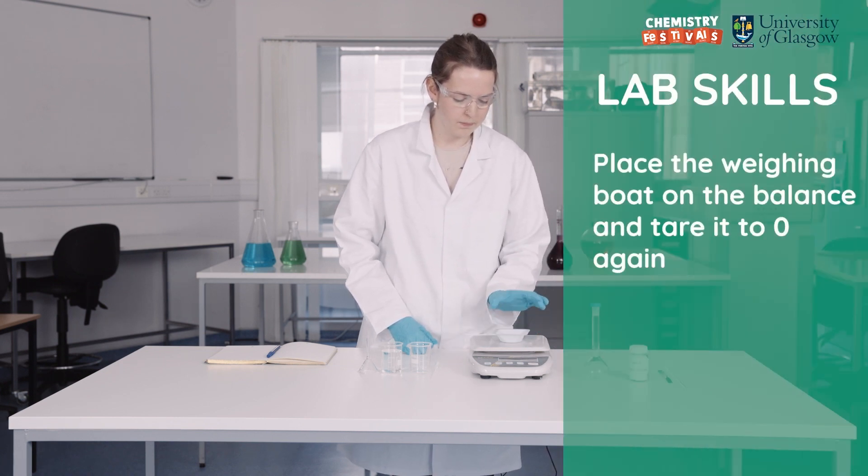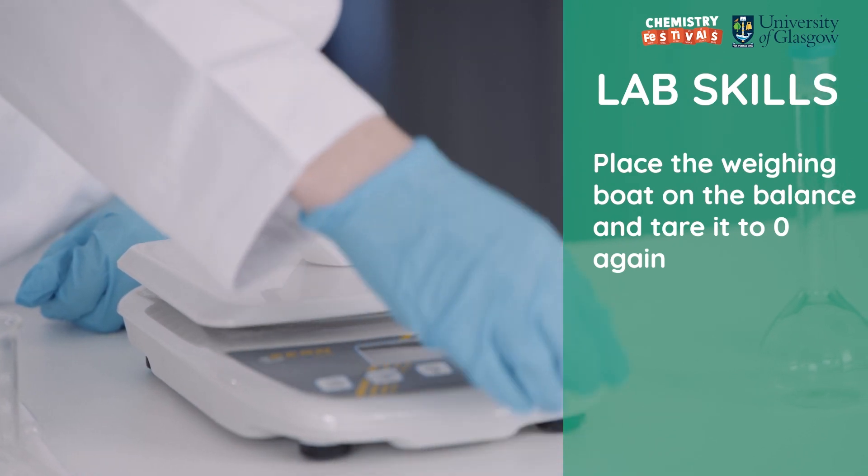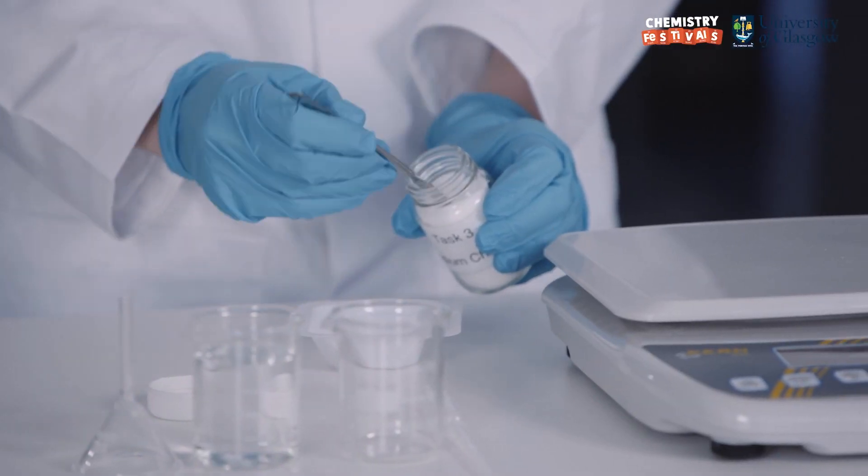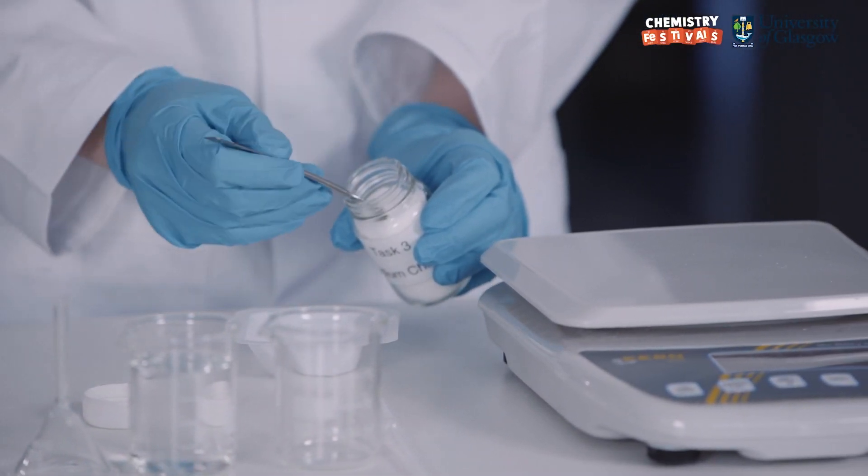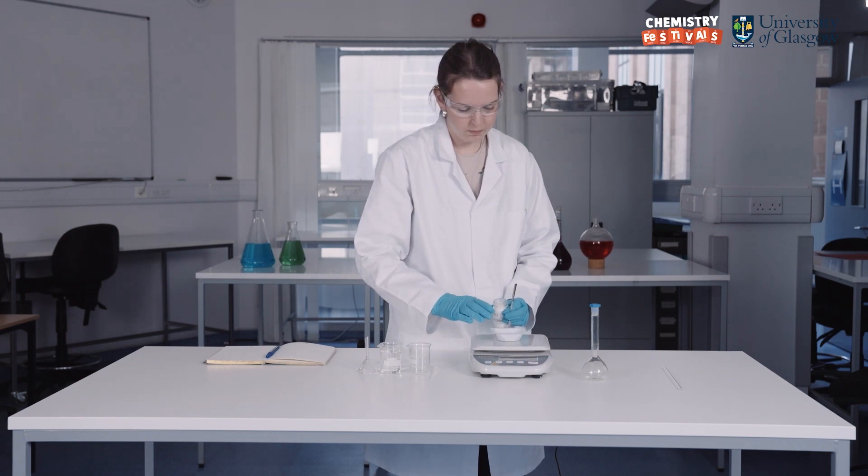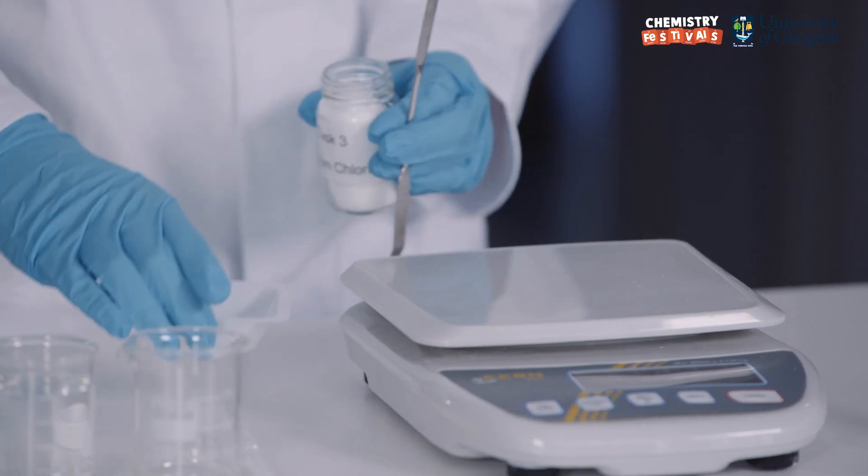I put the weighing boat on the balance and tare it again. I remove the weighing boat and add the sodium chloride. Taking the boat off the balance ensures there is no spillage of the chemical onto the balance. I put the weighing boat back on the balance to check I've got the right mass, and if not I can adjust it accordingly.